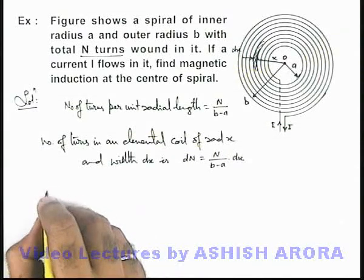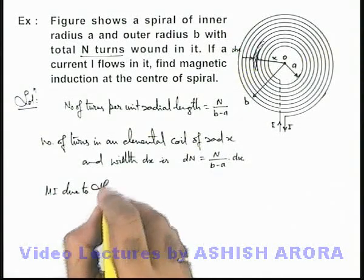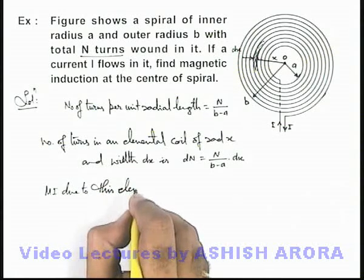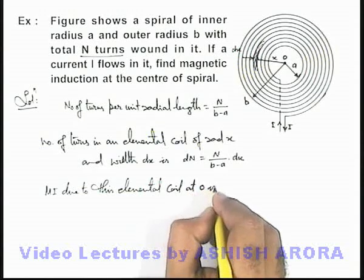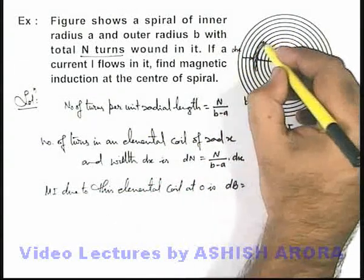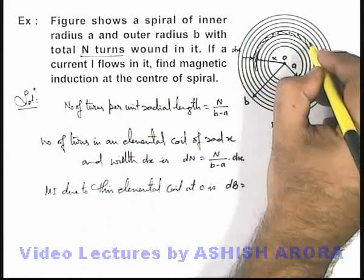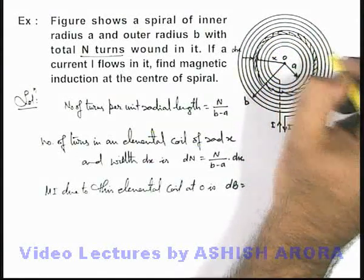Now we can simply get the value of magnetic induction due to this elemental coil at o. This can be written as dB, and being a circular coil, here we can consider this coil to be a complete circle which is of width dx.